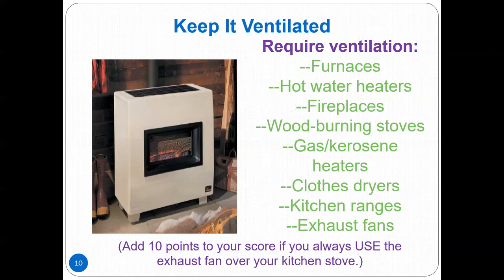The next principle is keep it ventilated. Ventilation means fresh air is circulating in the home and the house has openings for pollution to escape. The air indoors can be about five to ten times more polluted than the air outside. Poor ventilation is associated with common colds, the flu, pneumonia, and bronchitis. Items in your home that require ventilation include your furnace, hot water heater, fireplace, wood burning stoves, gas and kerosene heaters, clothes dryer, kitchen range, and exhaust fan. You should never heat your home with your stove.